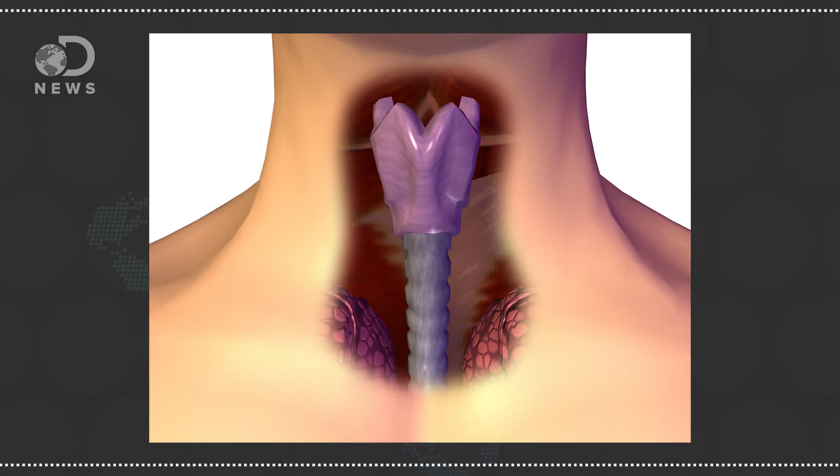To roar, animals have to have a voice box, and in the case of crocs and birds, they come in different types. Crocs use a larynx, the same kind of organ as you and me.